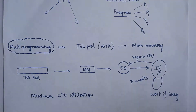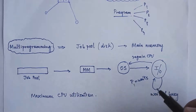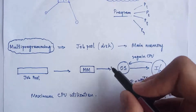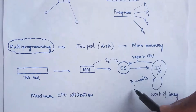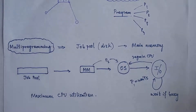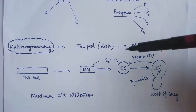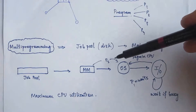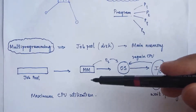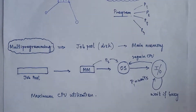But in a multiprogramming system that is not the case. During the waiting period, when process P1 is waiting for the IO device, the OS switches back to main memory and selects some other process, say P2. P1 is still waiting for the IO device, but now CPU performs whatever execution is required by P2 — so CPU is not idle. If P2 also requires IO, it will have to wait, and the CPU reverts to main memory and selects process P3. In this way, the CPU never sits idle unless there are no processes in main memory.